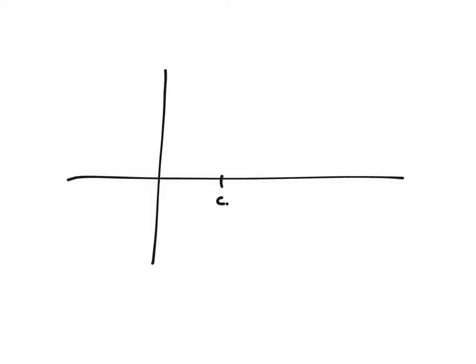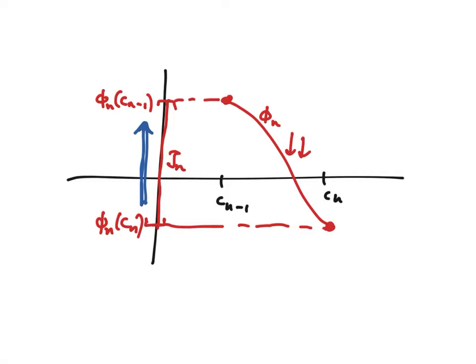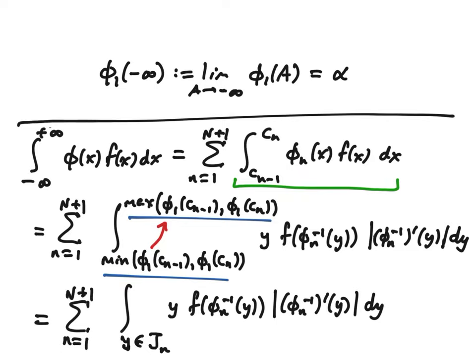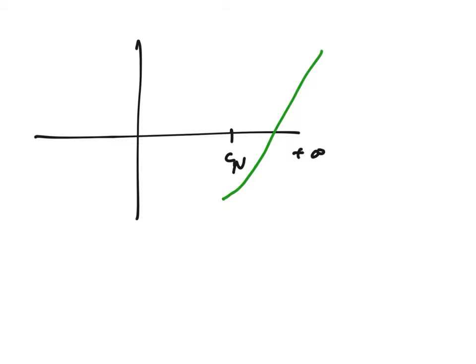If I take a typical interval c_{n-1} to c_n with some piece φ_n — say a red piece, strictly decreasing — the range is exactly that closed interval, with endpoints φ_n of c_{n-1} and φ_n of c_n. I have to write them in the correct order, taking the minimum as the lower limit and the maximum as the upper limit. This works in all cases including the unbounded ends, where the range is an unbounded interval expressed using plus or minus infinity.